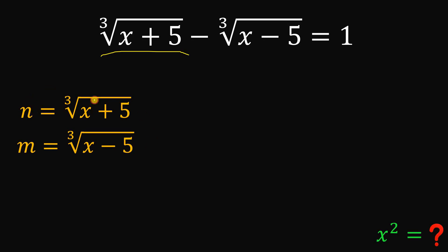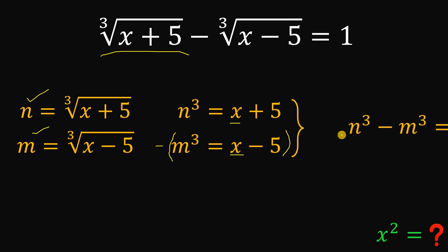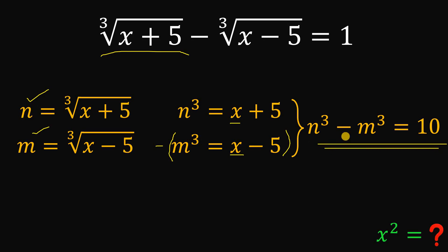When we cube the first equation, we get that n cubed equals x plus 5. And if we cube the second equation, it tells us that m cubed equals x minus 5. Now notice, if we want to eliminate the variable x, we need to subtract these two equations. If we subtract the second equation from the first, we eliminate x and get n cubed minus m cubed equals 10, because 5 minus negative 5 is 10.